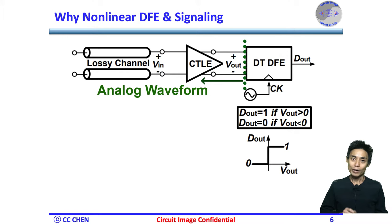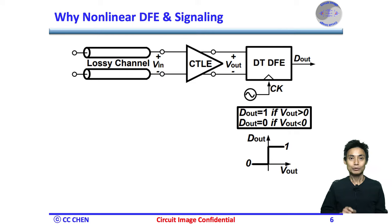Around the media or channel, the signaling must be an analog waveform. But inside the chip, those analog signals should be converted to digital format. After the CTOE, the discrete-time equalizer should be straightforward to quantize the analog input to a binary format in digital, which is the nonlinear between Dout and Vin as shown here.